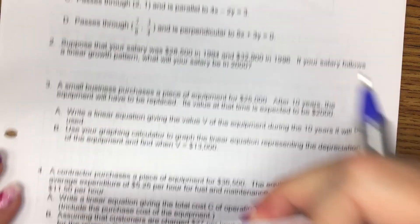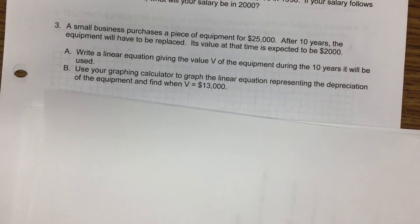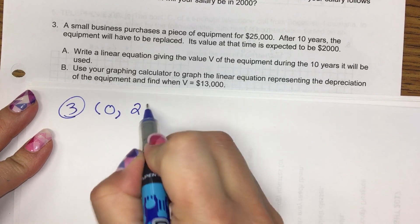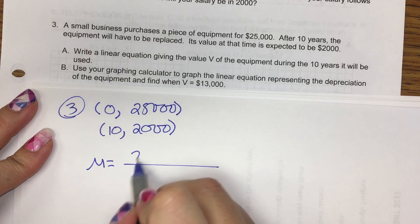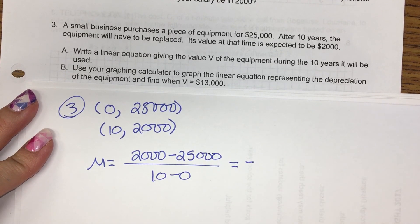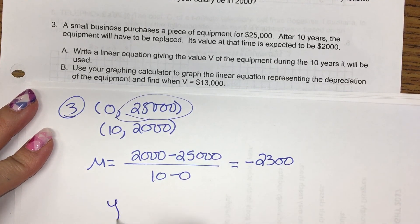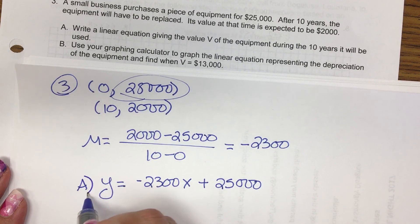Number three is similar, except instead of years, they give us at the beginning. So we've got zero and $25,000 and then 10 years later, $2,000. So first we need our slope. It's going to be a negative number. We have our y-intercept. So part B, so that's part A. Part B says, when will it equal $13,000?